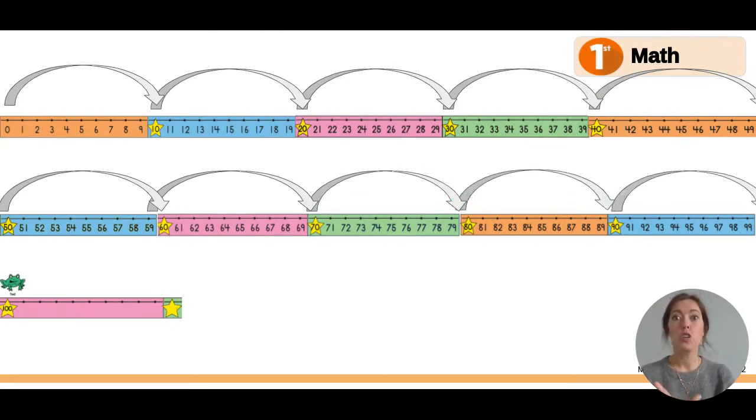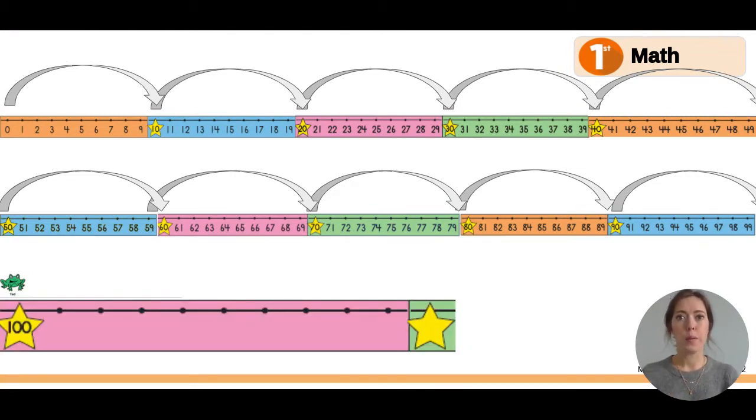Now we're going to zoom in on this part of the number line and count by ones. So we were counting by tens. Now we're at 100. Let's add one at a time. What is 100 plus one more? Yes, 101. Good.